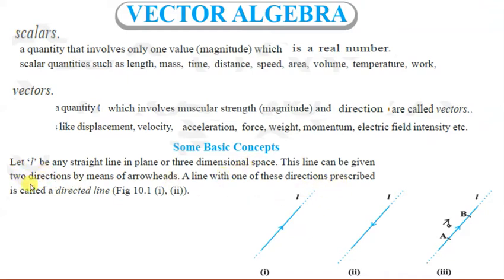A line can be given two directions by means of arrowheads. But a line with one of these directions prescribed is called a directed line.